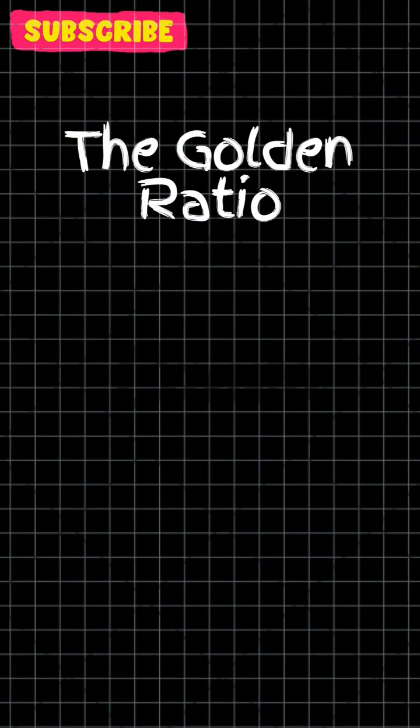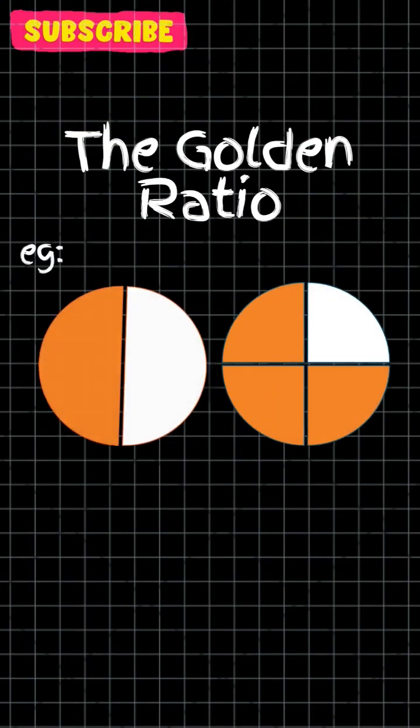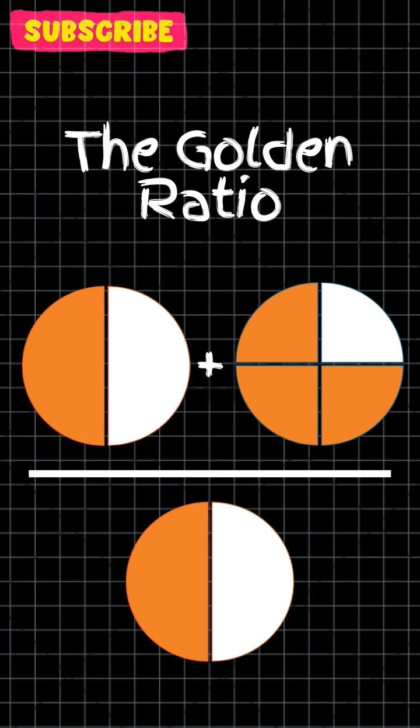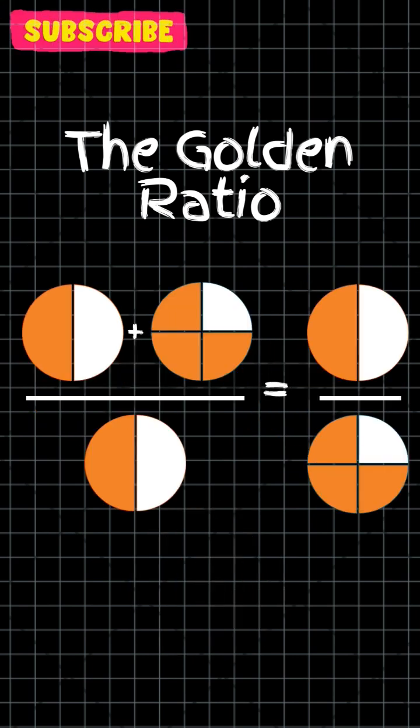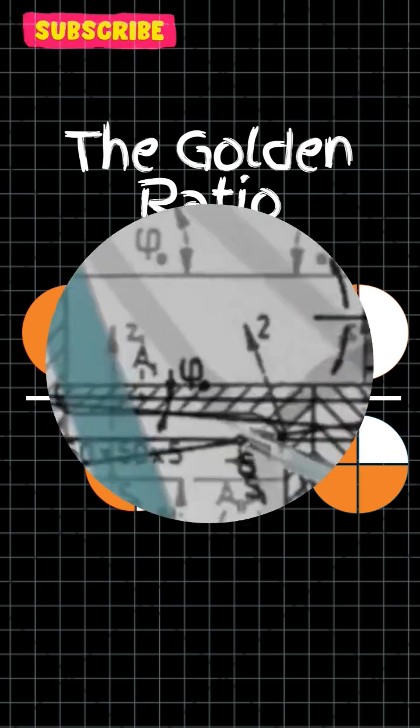So, the golden ratio is defined as the ratio of two quantities where the ratio of the sum of the quantities to the larger quantity is equal to the ratio of the larger quantity to the smaller one.